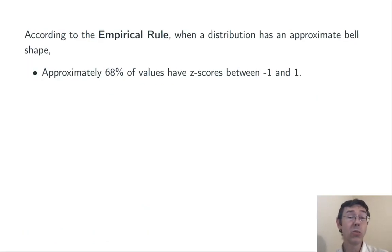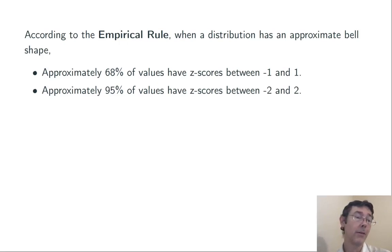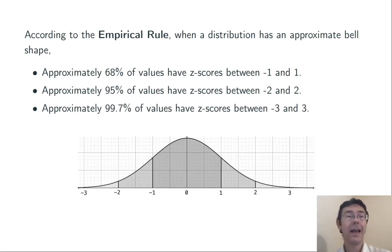According to the empirical rule, when a distribution has approximately a bell shape, a normal shape, about 68% of z-scores will be between negative 1 and 1. That is, about 68% of values in that data set will be within one standard deviation of the mean. Similarly, about 95% of values will have a z-score between negative 2 and 2, and 99.7% of values will have a z-score between negative 3 and 3. So nearly all of it.